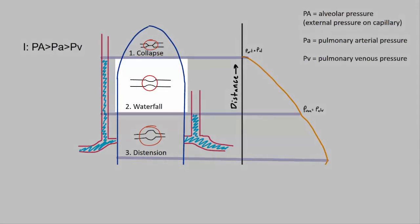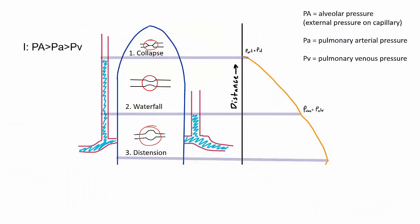In zone two, the waterfall zone, there is flow limitation due to alveolar pressure. The alveolar pressure causes partial collapse of the blood vessel but not completely. In this case, pulmonary arterial pressure > alveolar pressure > pulmonary venous pressure. The radius of the capillary is reduced, meaning blood flow is reduced, and the determinant of blood flow becomes the difference between pulmonary arterial pressure and alveolar pressure.